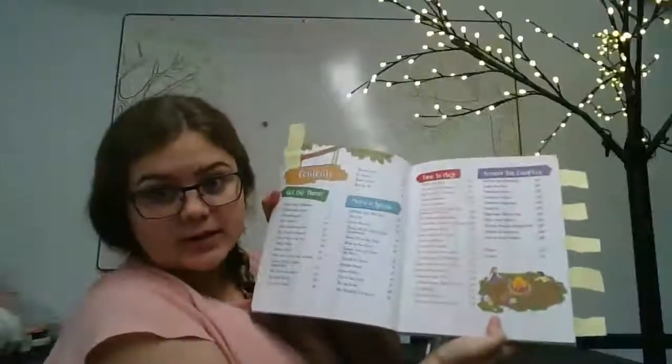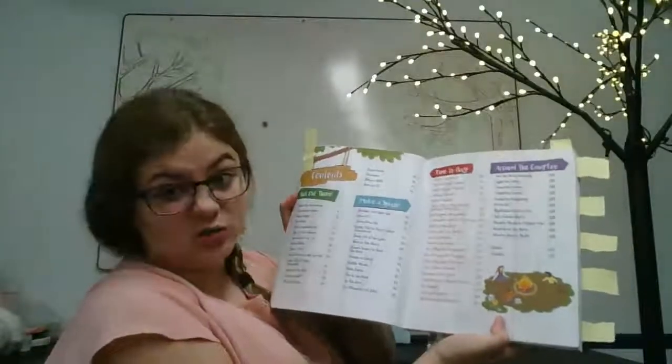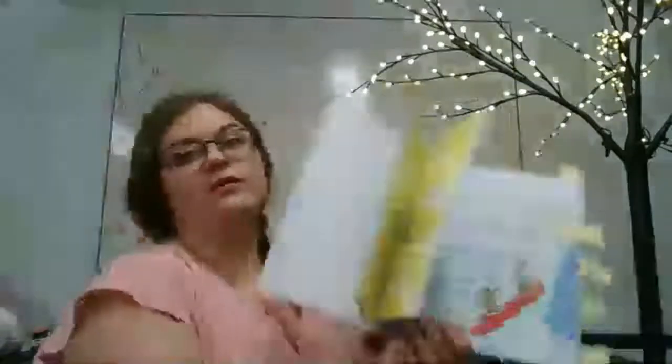So we're going to go back to our table of contents to find out where we're going next. So we're back to our table of contents and we're going to go over to the blue section right in the middle. It's called Make a Splash. So we'll move along. We're going to flip over to page 64.